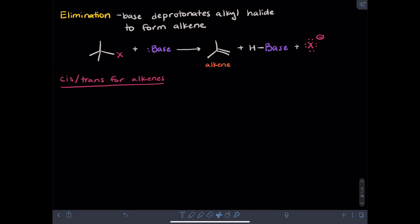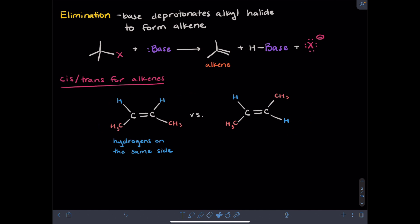I'll start by talking about cis and trans designations for alkenes. Let's consider the following two alkenes, where each carbon of each alkene contains a hydrogen and a methyl group. These alkenes are similar but not identical. Notice that in the alkene on the left, the hydrogens are on the same side of the alkene as each other, where the sides I'm counting are the top and the bottom. So both hydrogens are pointed toward the top — on the same side of the alkene. We would call this a cis alkene.